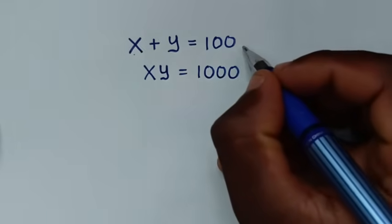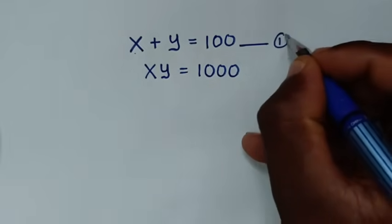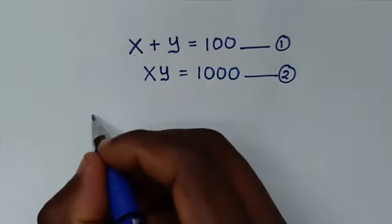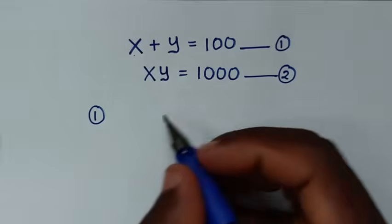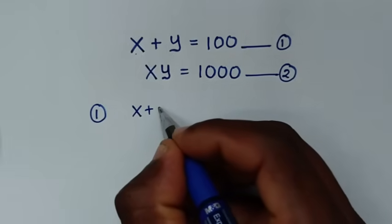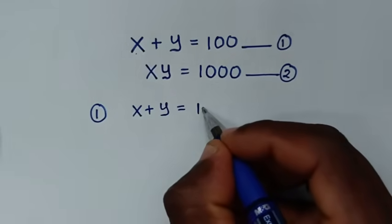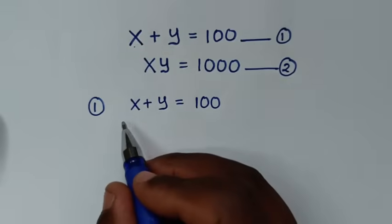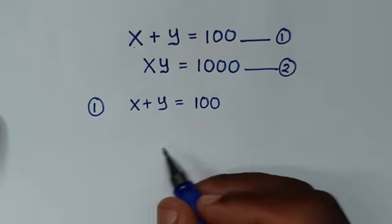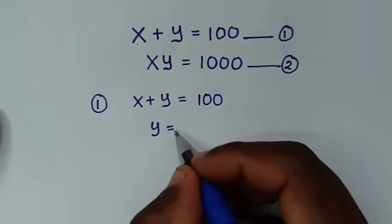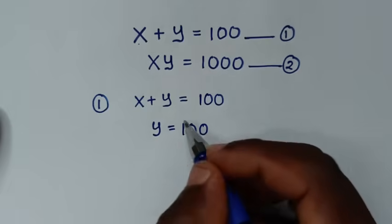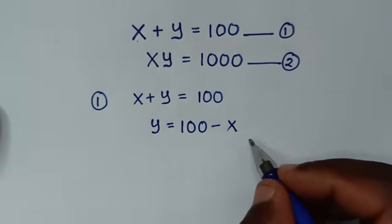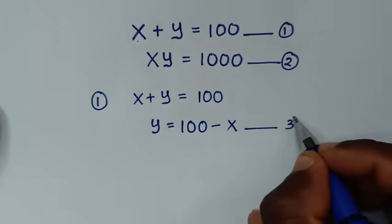In the first step, let's label this as equation 1 and this as equation 2. From equation 1, which is x plus y is equal to 100, we will make y the subject. We take x to the other side, so y is equal to 100 minus x. Let's call this equation 3.